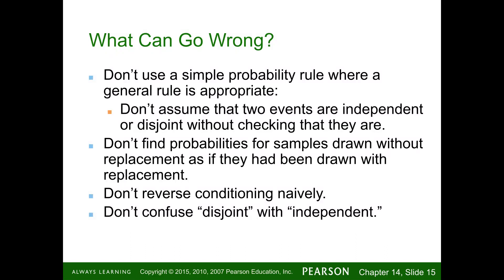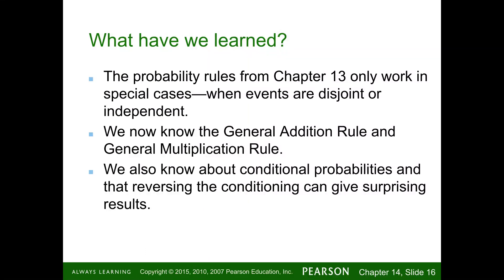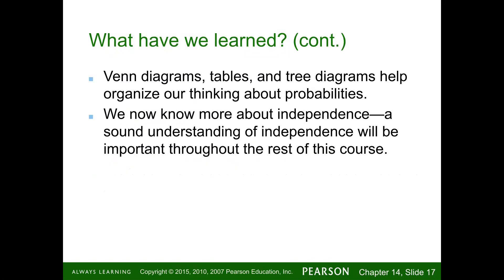The probability rules from Chapter 13 only work in special cases when events are disjoint or independent. In Chapter 14 homework, you'll encounter different scenarios. We know the general addition rule and the general multiplication rule, and we know that conditional probabilities and reversing the conditioning can give surprising results. Venn diagrams, tables, and tree diagrams help organize our thinking about probabilities.